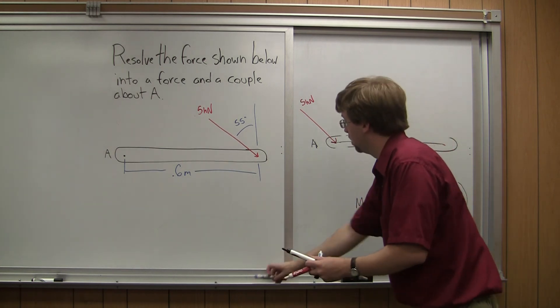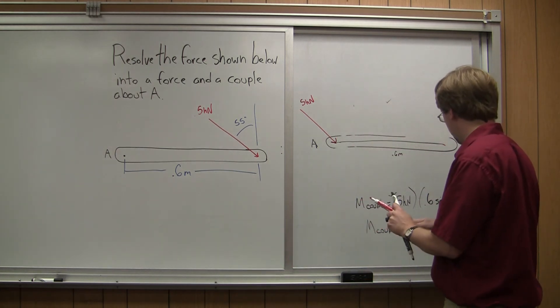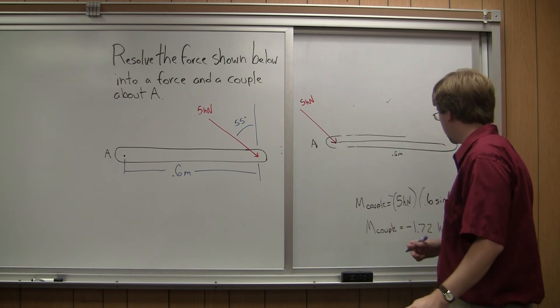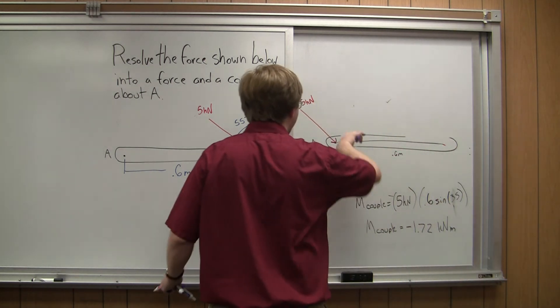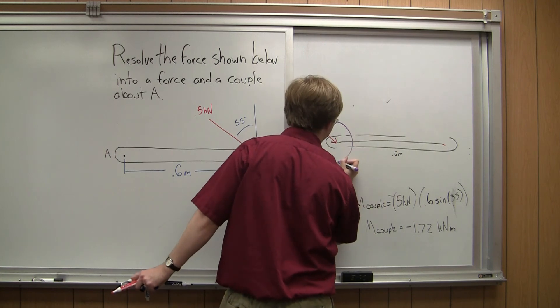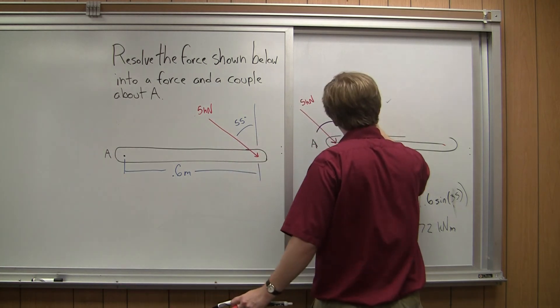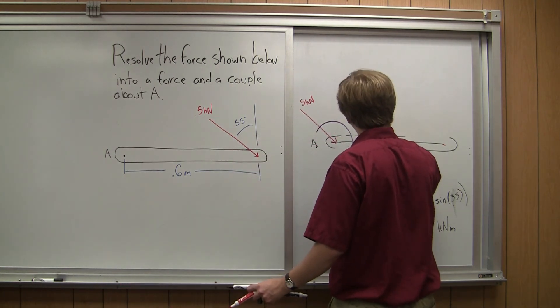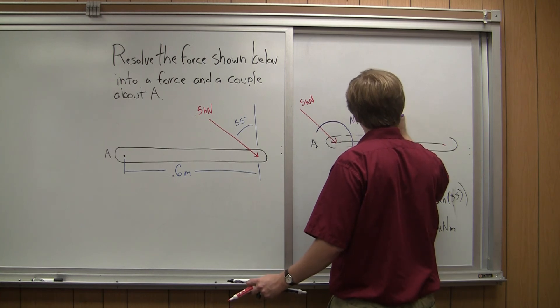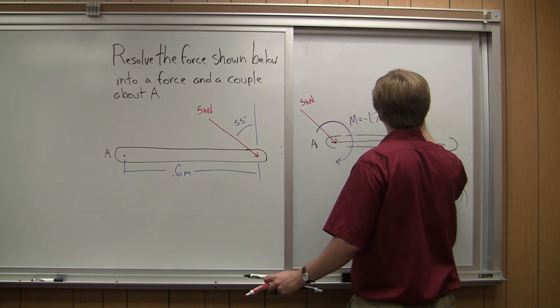and I draw in the moment of my couple, negative 1.72. So a negative moment is going to be going this way. Draw it in like this. M equals negative 1.72 kilonewton meters.